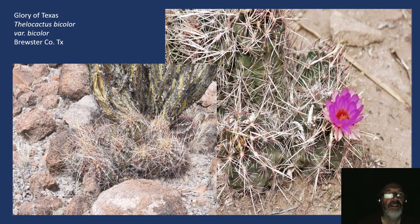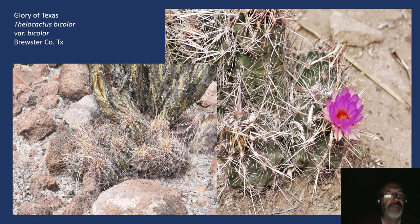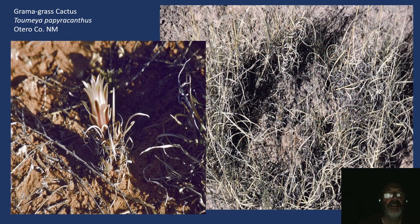And finally, leaving the Opuntias, we come to Thelocactus bicolor, the glory of Texas. These were also photographed along the River Road in Brewster or Presidio County. They clump fairly well, and when in full bloom they're gorgeous. This is another plant in high demand by collectors — it grows easily from seed and seed is readily available, so there's no reason to dig up any of these plants. Seed is pretty much available for almost everything I've shown you tonight. And finally, one of my all-time favorite cacti: the grama grass cactus, Toumeya or now Sclerocactus papyracanthus.